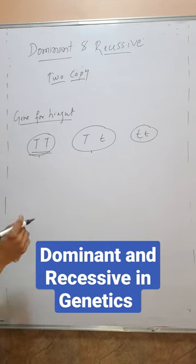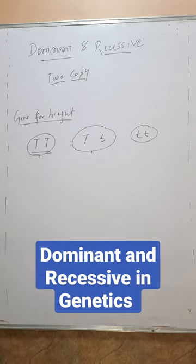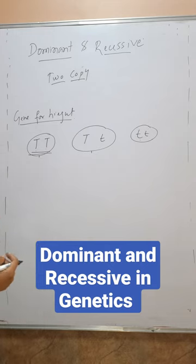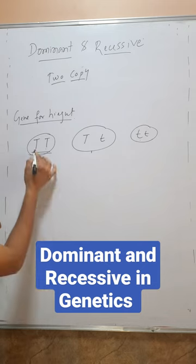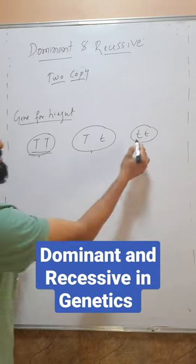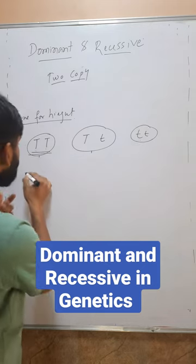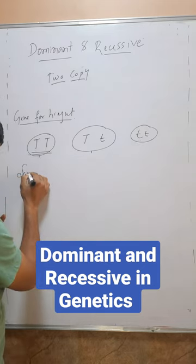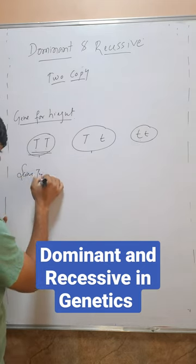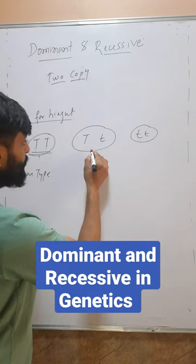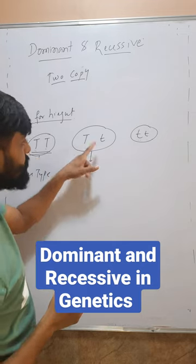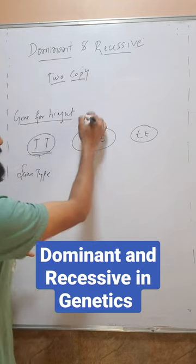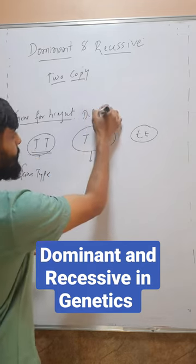These two copies may be the same type or may be different types. Here I am taking the gene for height. So it may inherit capital T and capital T, or small t and small t — these are the same type. But it may also inherit capital T and small t — these are different types.